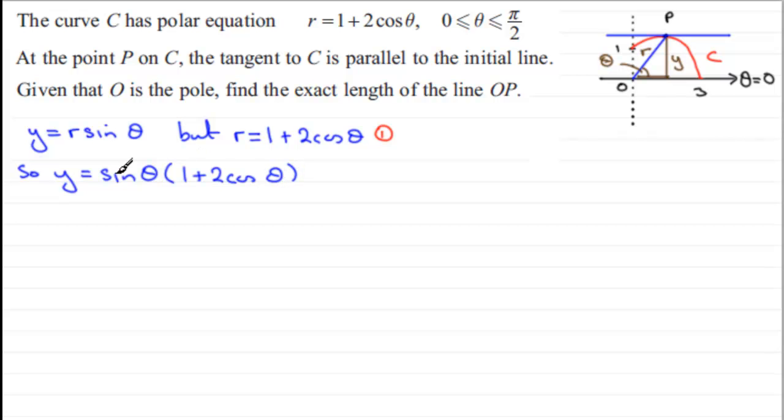So I should be able to differentiate this with respect to theta. But before I do that, let's just expand the bracket so we get sine theta plus 2 sine theta cos theta. Now we should recognize this second term here is the double angle identity for sine theta. So I can write this then as sine of 2 theta. Now I've got that far, I should be able to just differentiate this in the usual way.